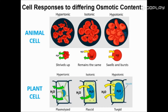When placed in a hypertonic solution, animal cells — which lack a cell wall — will lose water and as a result the cell is going to shrivel up. While in a plant cell, the membrane is going to stretch away from the cell wall, eventually resulting in a process known as plasmolysis.